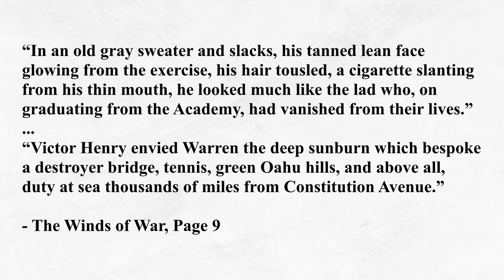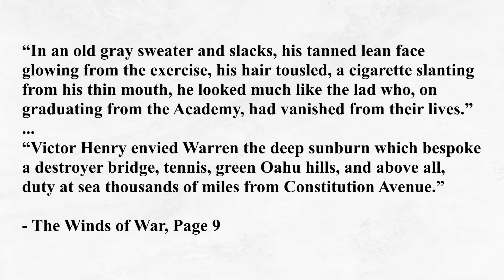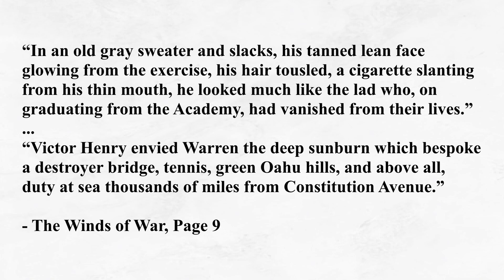'In an old grey sweater and slacks, his tanned, lean face glowing from the exercise, his hair tousled, a cigarette slanting from his thin mouth, he looked much like the lad who, on graduating from the academy, had vanished from their lives. Victor Henry envied Warren the deep sunburn which bespoke a destroyer bridge, tennis, green Oahu hills, and above all, duty at sea, thousands of miles from Constitution Avenue.' Again, Wouk begins by describing the character's physical appearance — a surface description — before adding depth by mentioning that, from his father's perspective, he looked much like the lad who had vanished from their lives. This blends his physical appearance with useful exposition, and Wouk joins together Victor's longing to be back out at sea with a description of his son's deep sunburn. The closer I inspect Wouk's writing, the more I notice how he's often conveying more than one piece of information at the same time — the mark of a skilled writer.